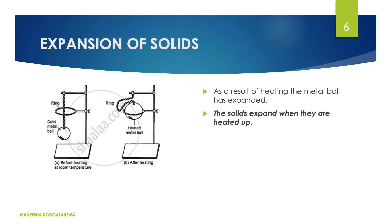Now we are going to discuss about the expansion of solids. In this practical there are two diagrams. In the first diagram you can see there is a metal ring and a metal bore. The second diagram shows the result after heating the metal bore — after heating it, you cannot put it through the metal ring. The reason is the expansion of the metal bore. After heating, its dimension has increased and we cannot move it through the iron ring. So we can conclude that solids expand when they are heated.